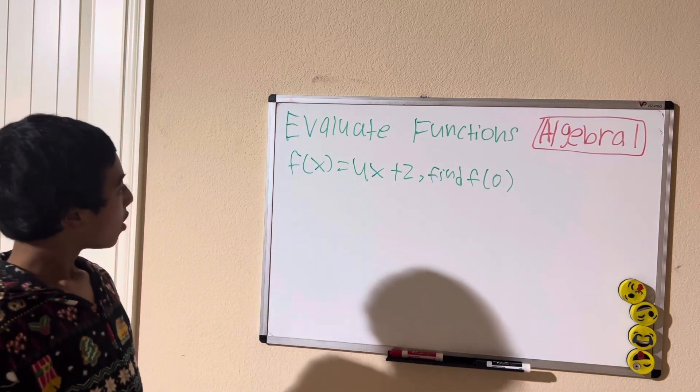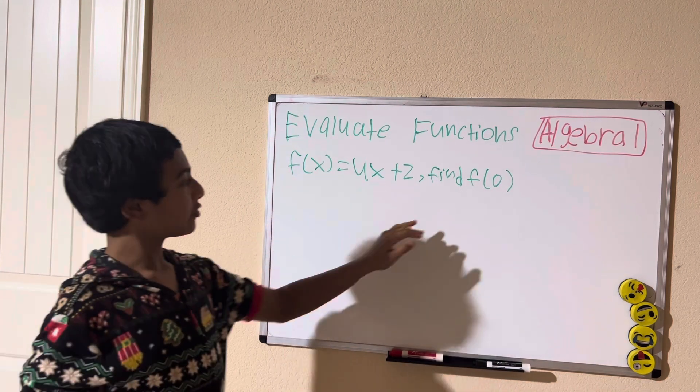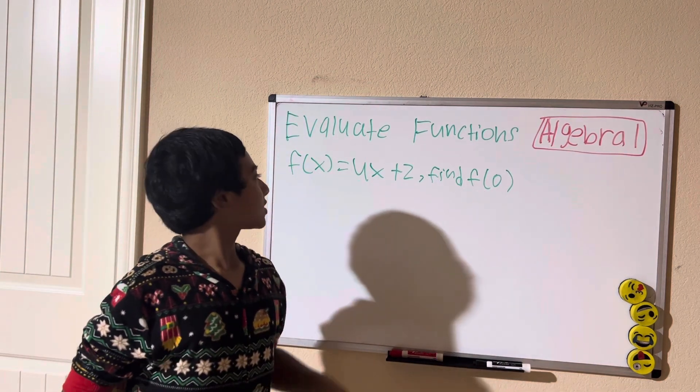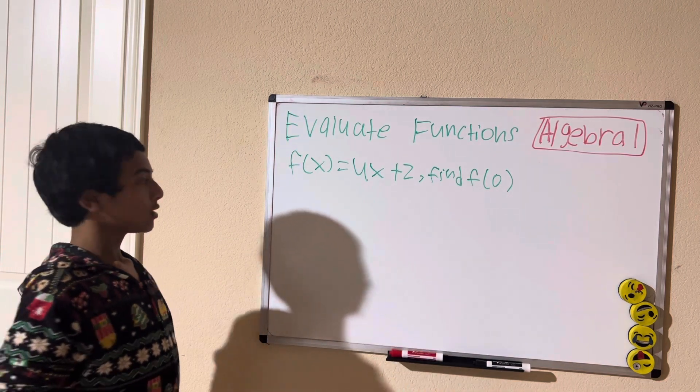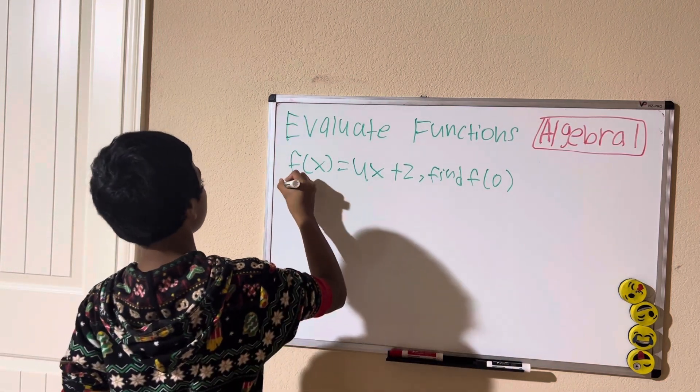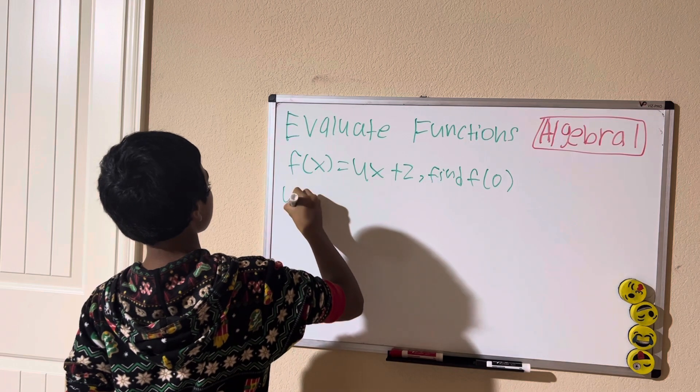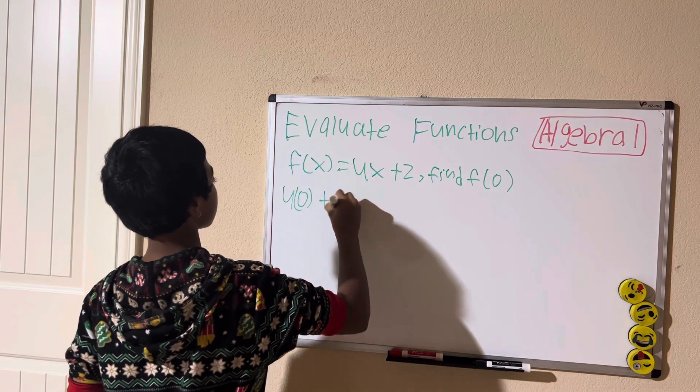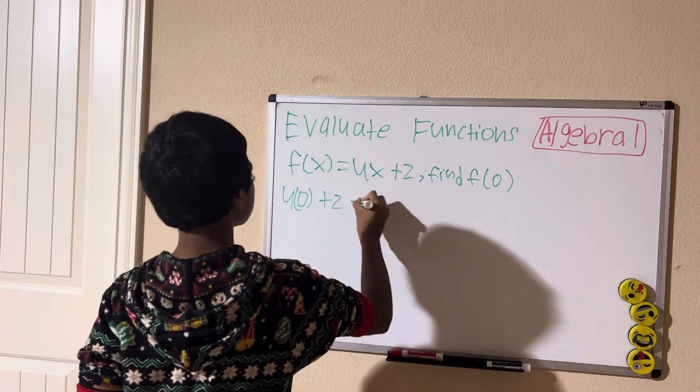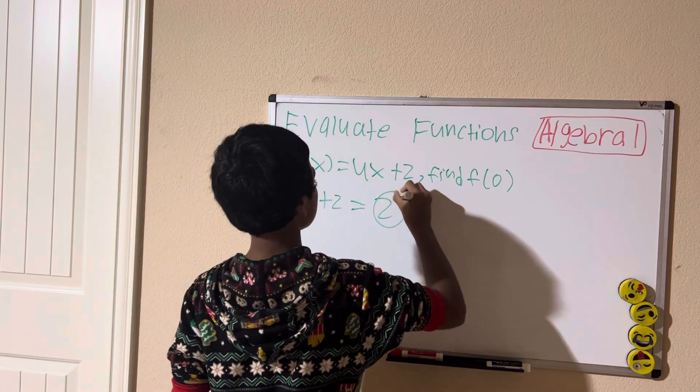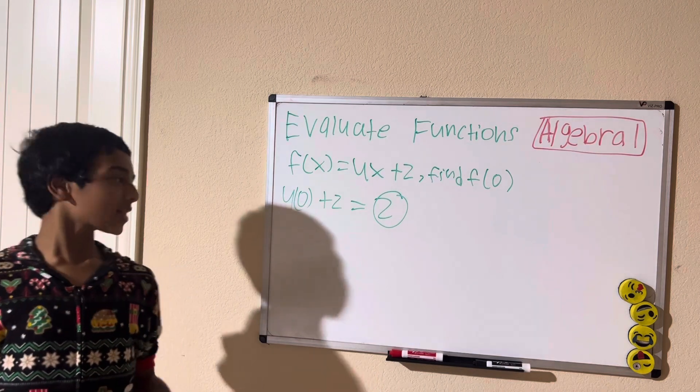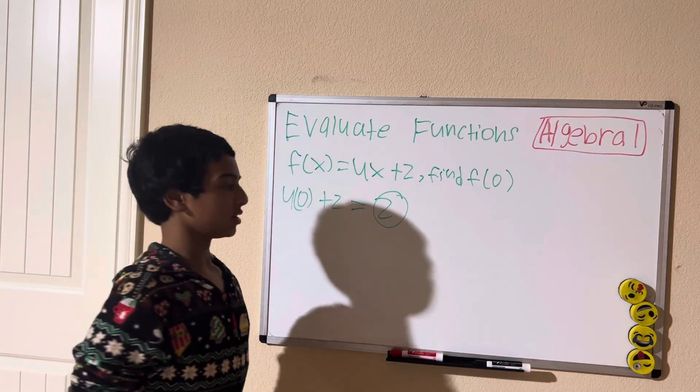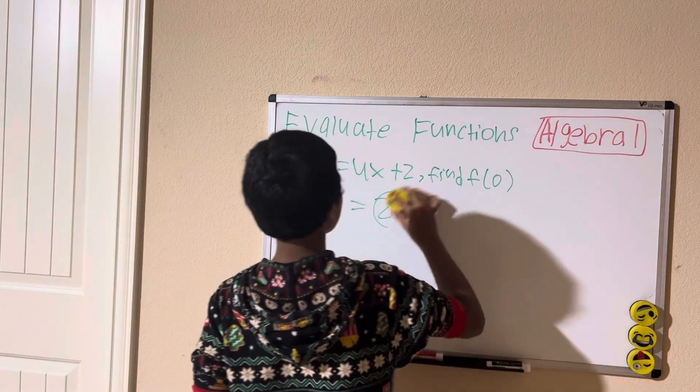When it says f(x) and then it says f of a number, we're going to take that number and plug it in for x. So we're going to have 4 times 0 plus 2, which is equal to 2. So 2 is how you evaluate the function, is what you get when you do it.